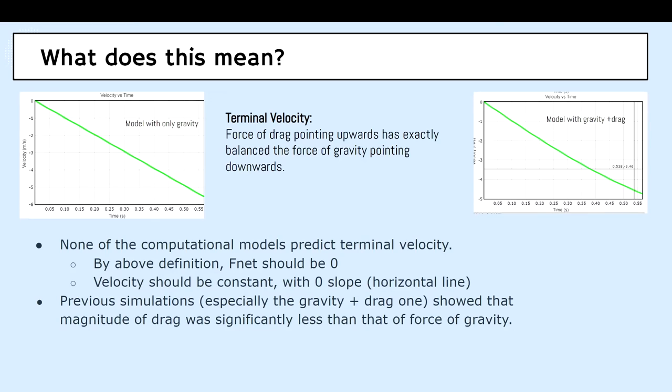So, what does this mean? The terminal velocity definition is that the force of gravity pointing upwards has exactly balanced the force of gravity pointing downwards. So by this definition, none of the computational models predicted terminal velocity because then f net will be zero and velocity will be constant, meaning there will be zero slope, which is a horizontal line.